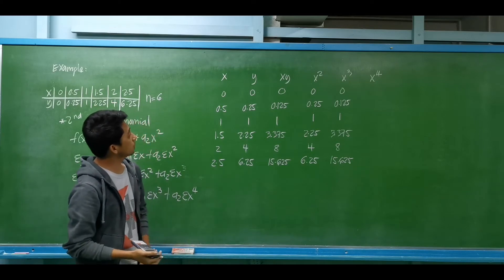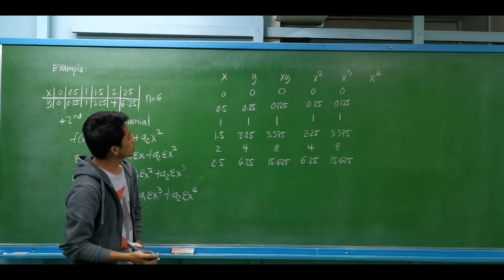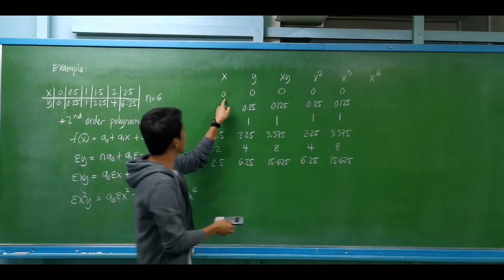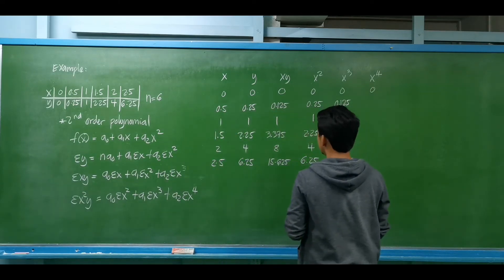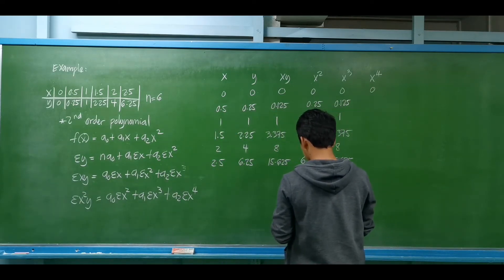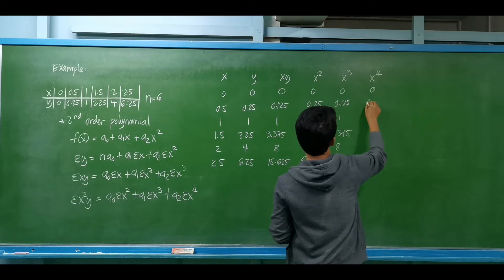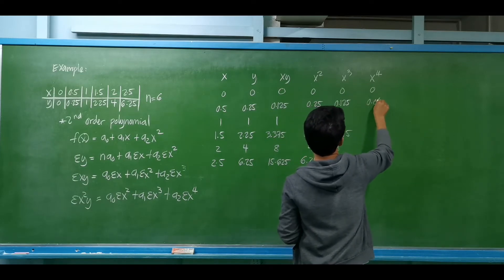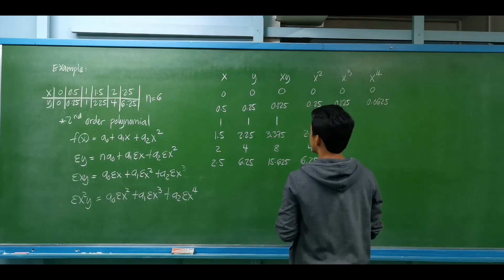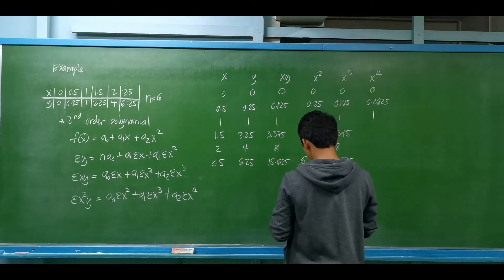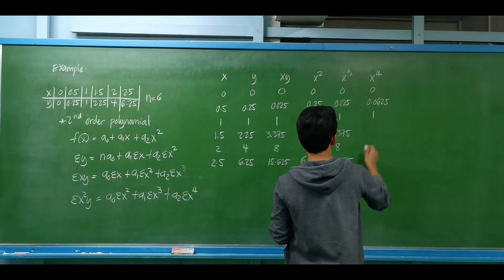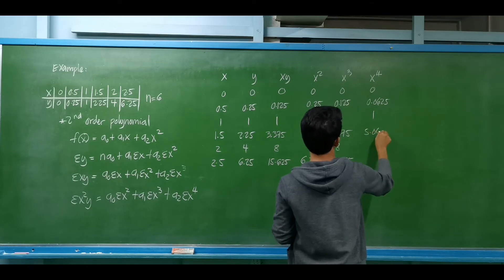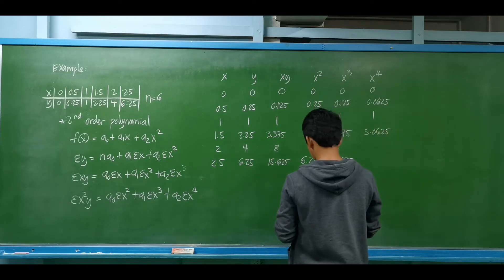For x to the fourth power: 0⁴ = 0; 0.5⁴ = 0.0625; 1⁴ = 1; 1.5⁴ = 5.0625; 2⁴ = 16.